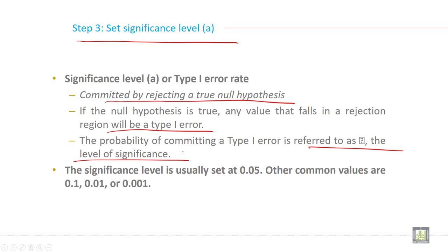The significance level is usually set at 0.05. Other common values are 0.1, 0.01, or 0.001.